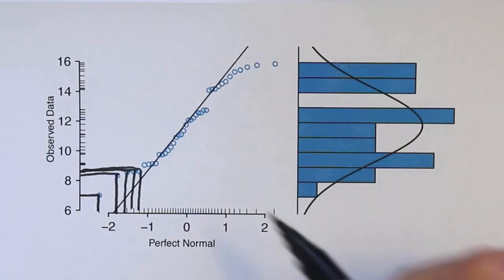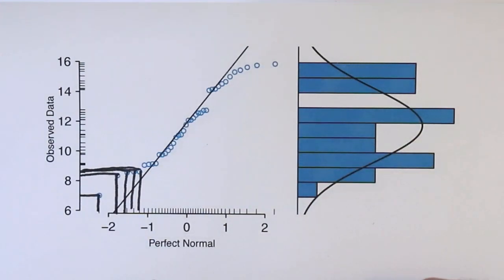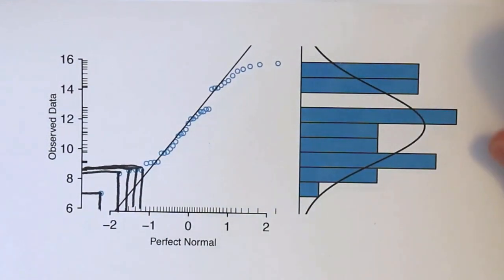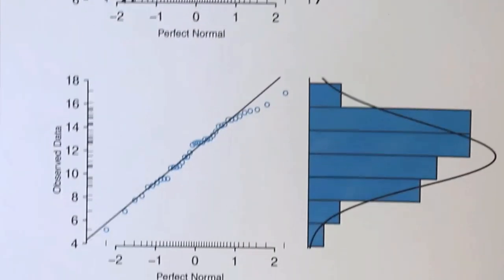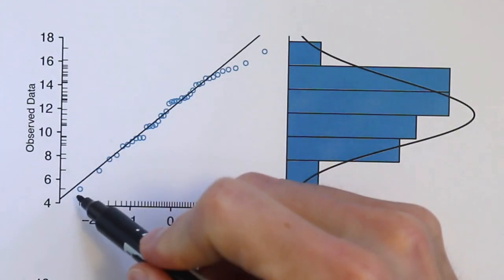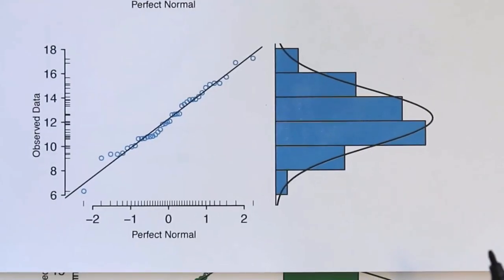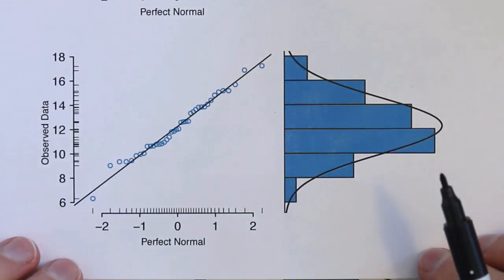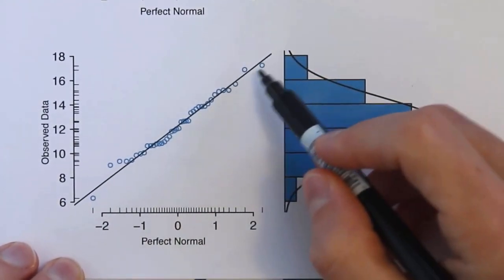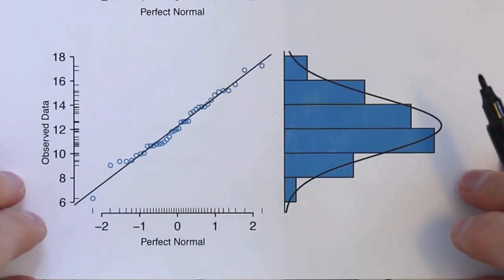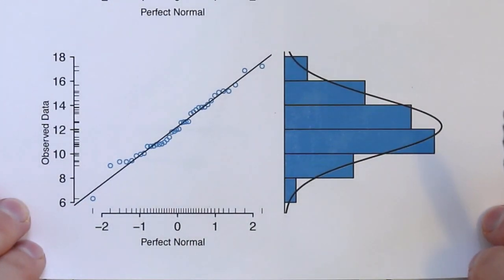The key takeaway from this plot is how closely the data need to fall to a straight line. For 40 observations, a fair number fall closely to the line but there are some in the tails that might not. Looking at another 40-observation data set, most points are near the line with just a few off on the upper end. A third 40-observation data set also shows observations tending to fall close to the line, though not perfectly. All three of these data sets actually are from a normal distribution.